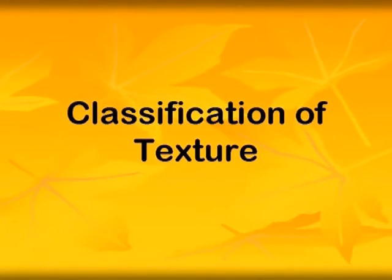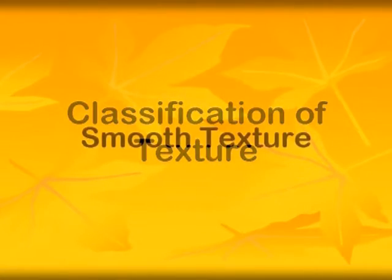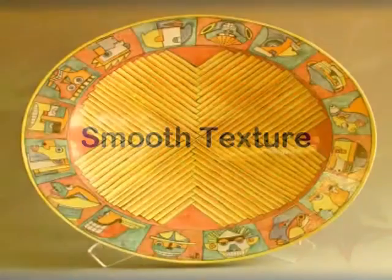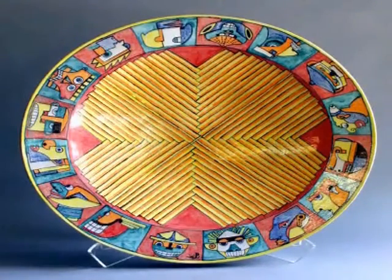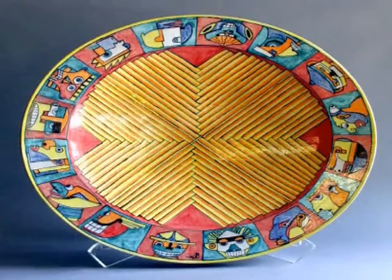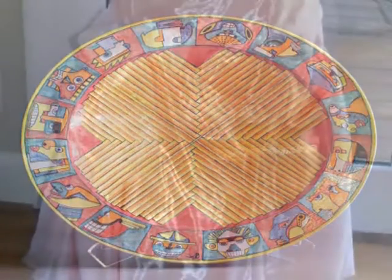Classification of Textures. Smooth Textures: smooth surfaces or textures are normally glossy, shiny and slippery.